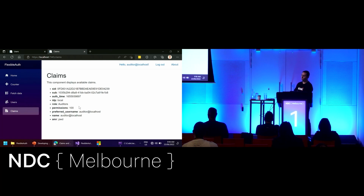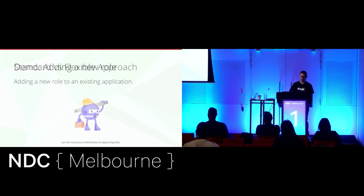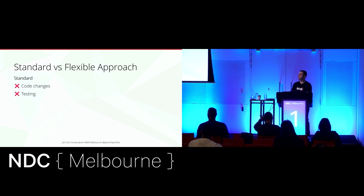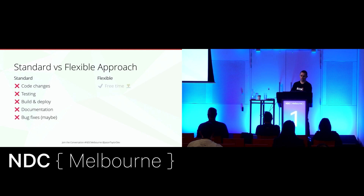Let's compare the standard approach with the flexible approach. With the standard approach, we had to make code changes, test those changes, build and deploy, and document those changes — which we also didn't do. There will probably be some bug fixes because we impacted quite a few components in the system. With the flexible approach, we weren't required to do any of that — it could have been completed by an administrator or end user. We don't have to focus on these basic concerns; we can start delivering new requirements and business value.